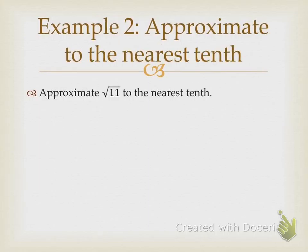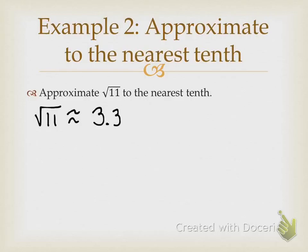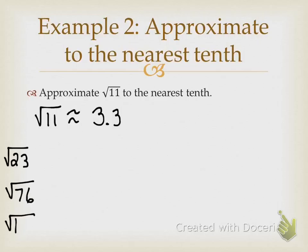That's example 1. Now in example 2, I'm going to approximate to the nearest tenth. This is as simple as just putting it in your calculator. Go ahead and put the square root of 11 in your calculator and press equal. You'll see it shows the square root of 11 again — press the S to D button to change it to a decimal. You're going to round to the nearest tenth. So the square root of 11 is approximately 3.3. Now I want you to do the square root of 23, the square root of 76, and the square root of 108 — approximate each one to the nearest tenth.